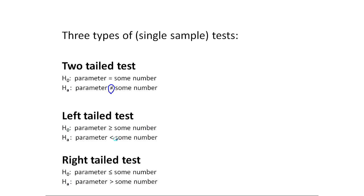A left-tailed test is a less than on HA, and a right-tailed test is a greater than on HA. The other thing to notice is H naught always has an equals in it. So here it's an equals, here it's a greater than or equals, here it's a less than or equal. That's always going to be the way H naught is set up.